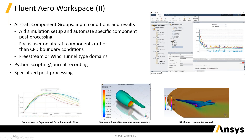The reduced GUI uses aircraft terminology, but you can always go back to the full GUI and switch between them. You can look at specific components, and it works for both the density-based and the pressure-based solver. You can do parametric runs, make parametric plots, and script it with Python.